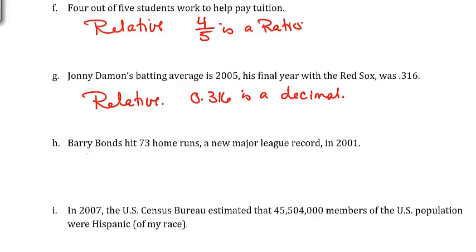stating it as a decimal. Barry Bonds hit 73 home runs, a new major league record in 2001. So this is counting how many home runs. And so that's an absolute measure.